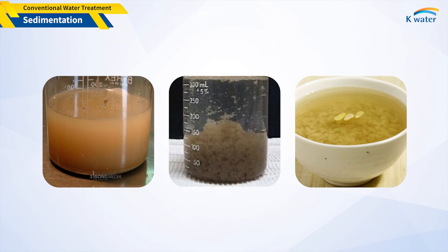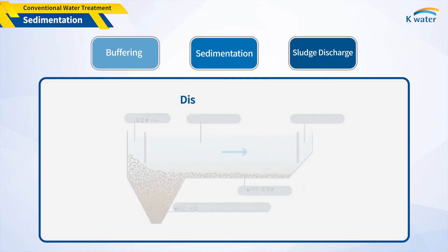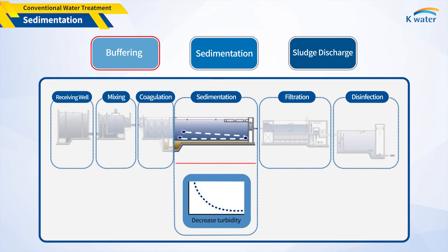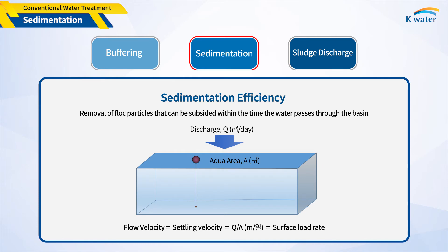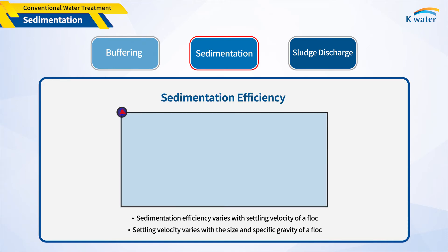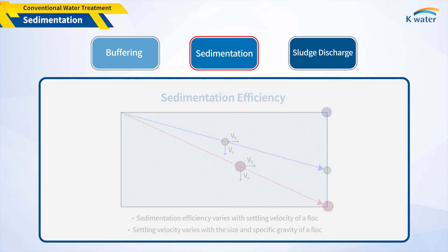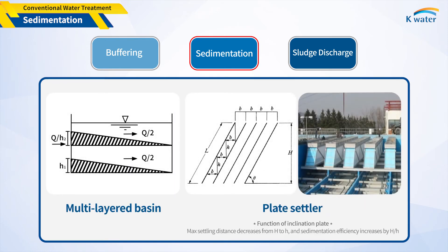The sedimentation process consists of sinking and separating most of the large and heavy flocs obtained in the previous process. This process has three functions: buffering, sedimentation, and sludge discharge. Buffering reduces the burden of the next process by stably removing turbid substances despite changes in raw water quality. Sedimentation removes large flocs by gravity. The most basic indicator of sedimentation efficiency is the surface loading rate, which represents the minimum settling velocity of particles. Flocs with a settling rate greater than the surface loading rate can be removed 100% during sedimentation; smaller particles are removed in the subsequent filtration process. To effectively remove flocs, multilayered basins or inclined plates are used to increase the settling area.